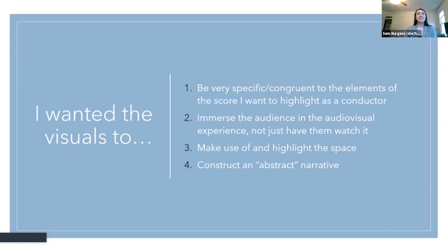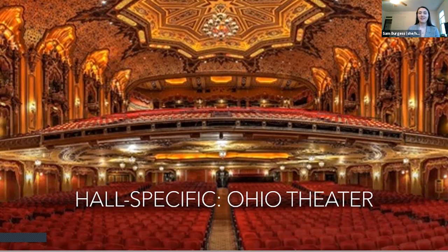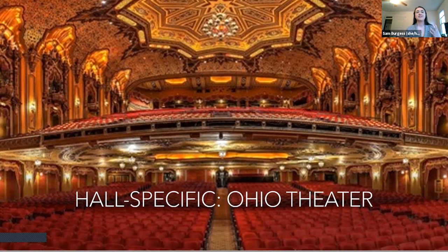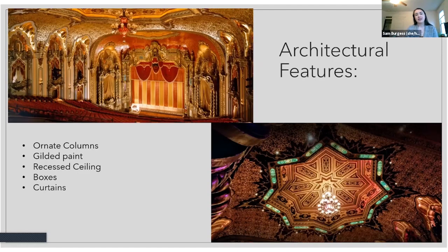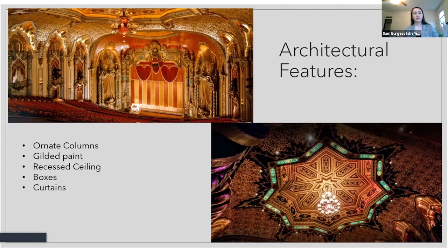This hall-specific design was inspired by our local Ohio Theater, which is one of the most beautiful concert halls I've ever been in. I was interested in how I could bring the space into the performance, so I identified architectural elements I could highlight: the ornate columns, the gilded paint, the beautiful recessed ceiling, the boxes on the side of the hall, the curtains — all elements that with visual design you can bring out or highlight about the space.